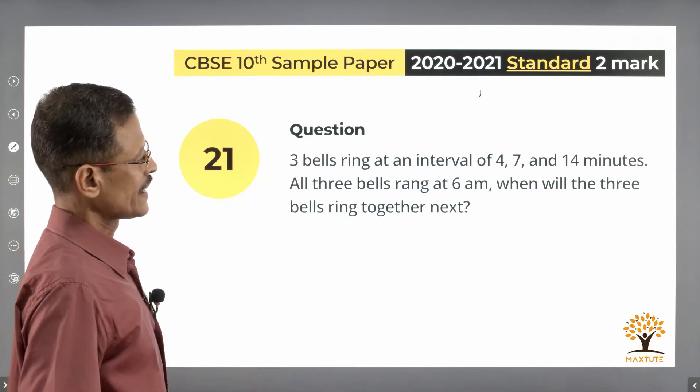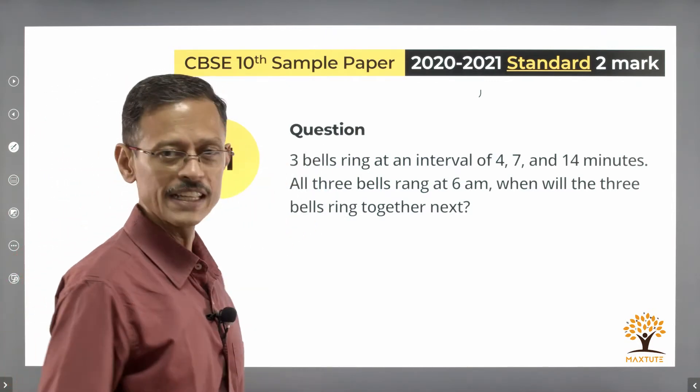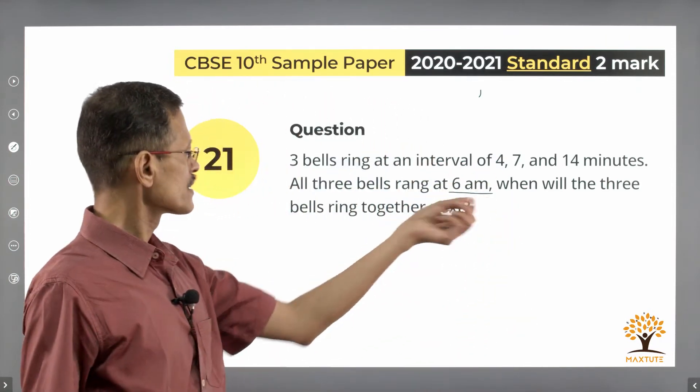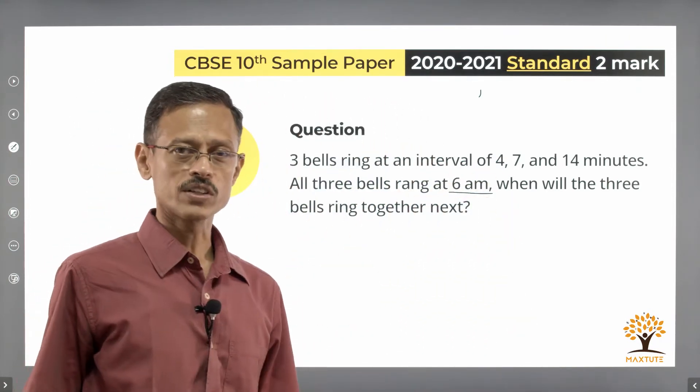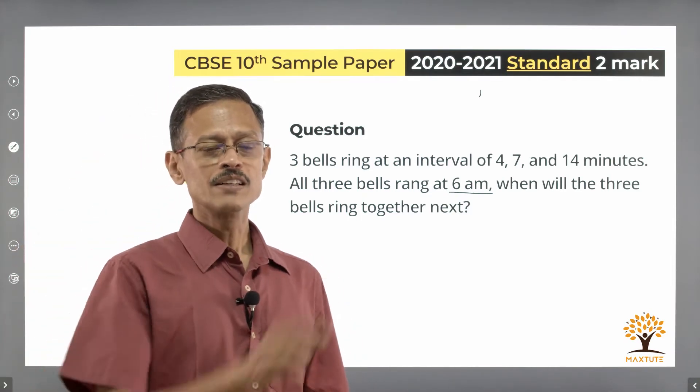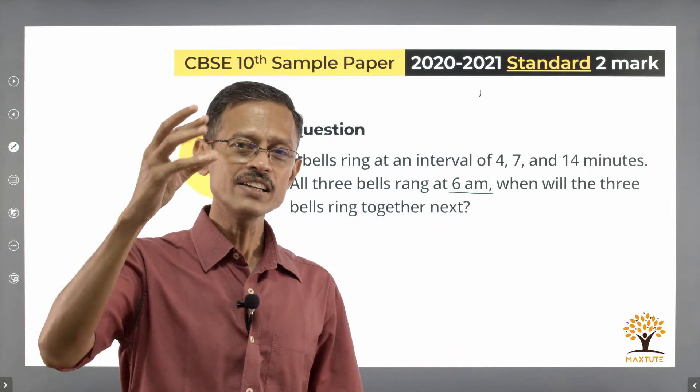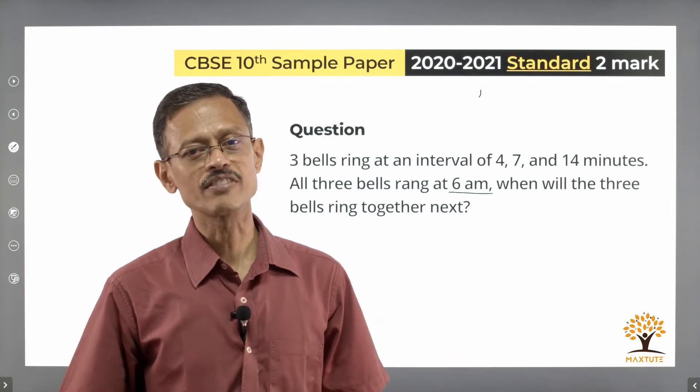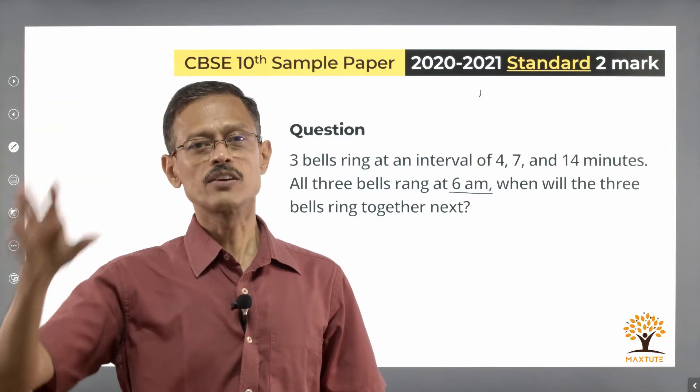Let's get started with the question. Three bells ring at an interval of 4, 7, and 14 minutes. All three bells rang at 6 a.m. When will the three bells ring together next is what the question is. Let's just basically list down the times when they will ring based on the information given and then decode what is to be done. That's the learning part.